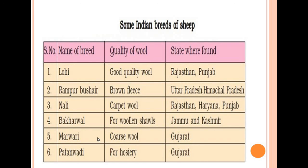In this slide you can see some Indian breeds of sheep. Lohi is a good quality wool found in Rajasthan. Rampur Bushair has brownish wool. Nali produces carpet wool. Bakarwal is used for wool and shawls. Marwari produces coarse wool, and Patanwadi is used for hosiery. These are the different qualities of wool from different breeds found in different states.